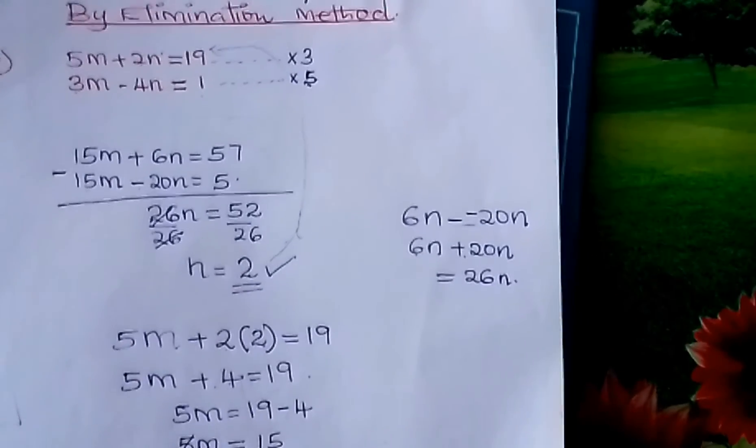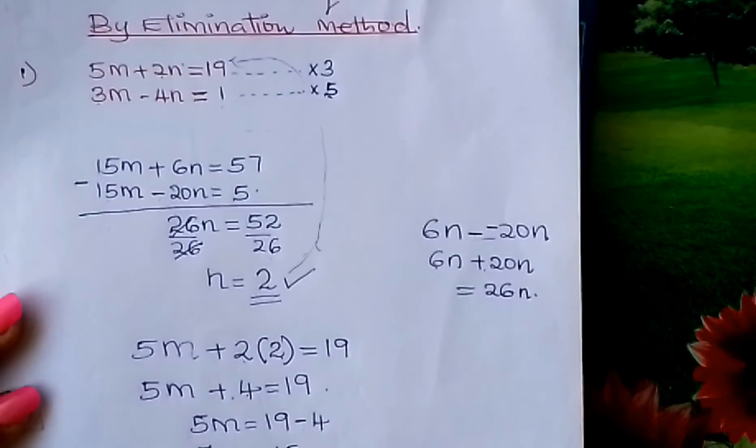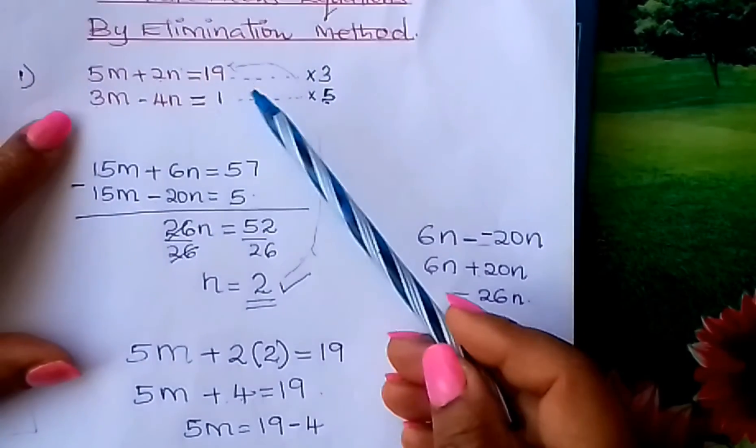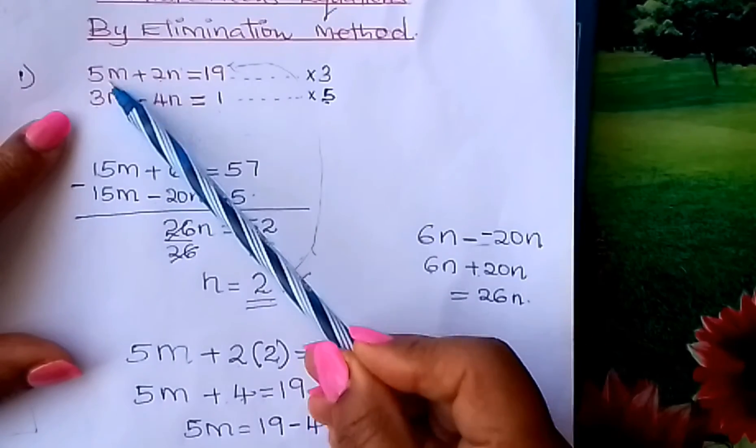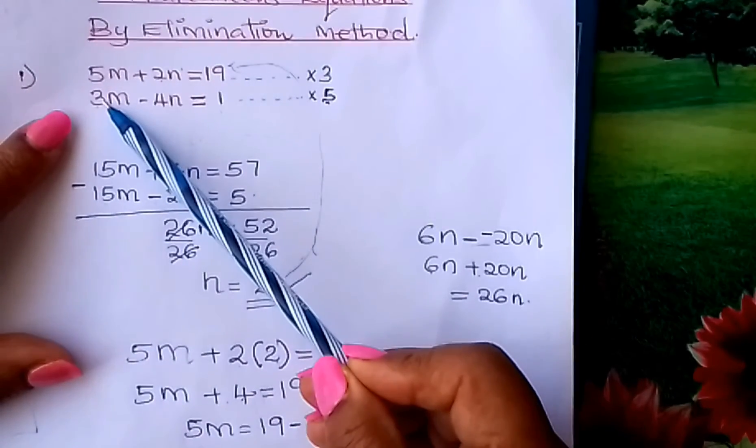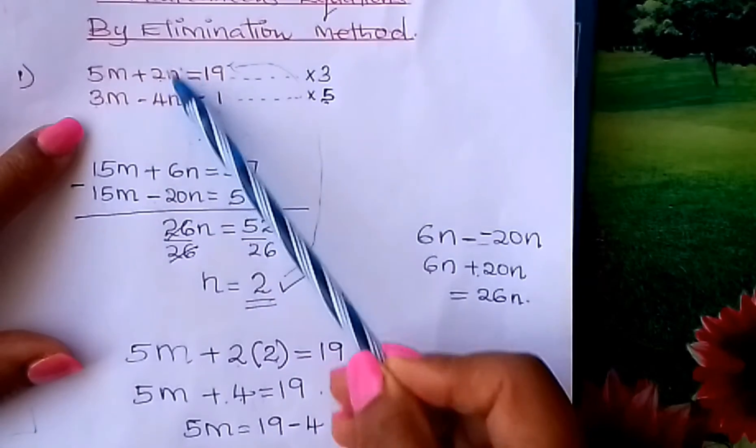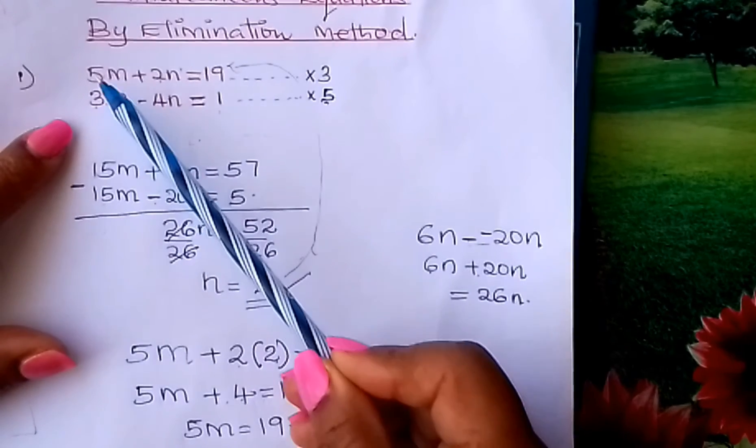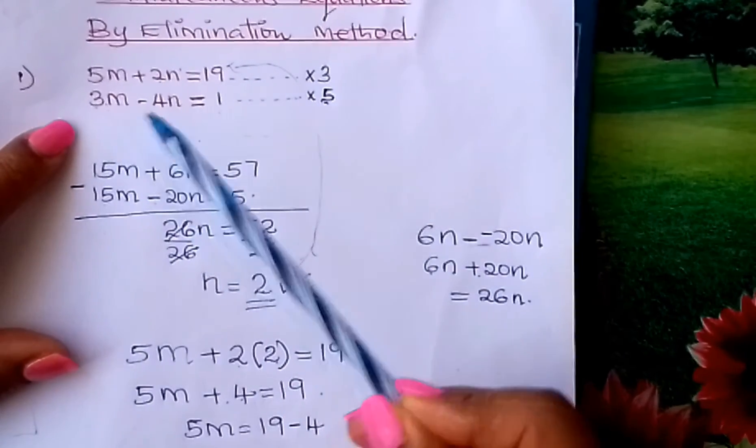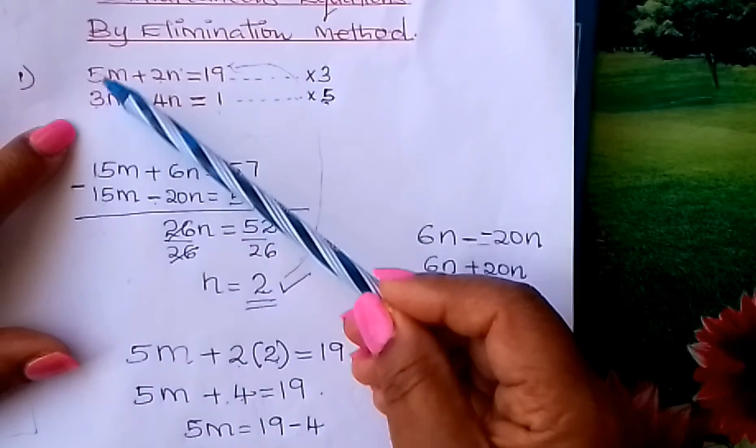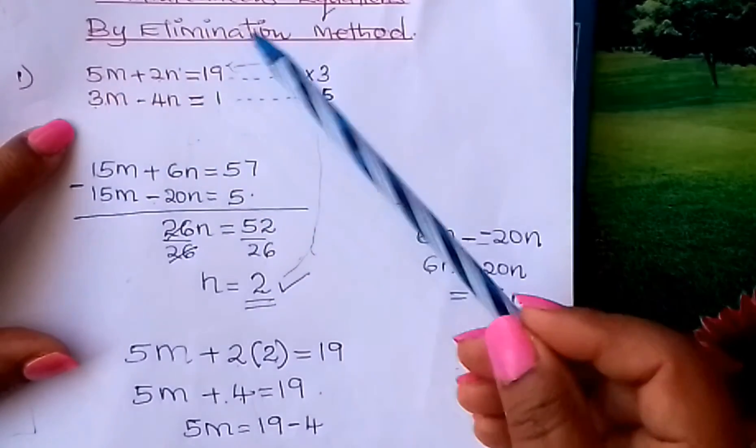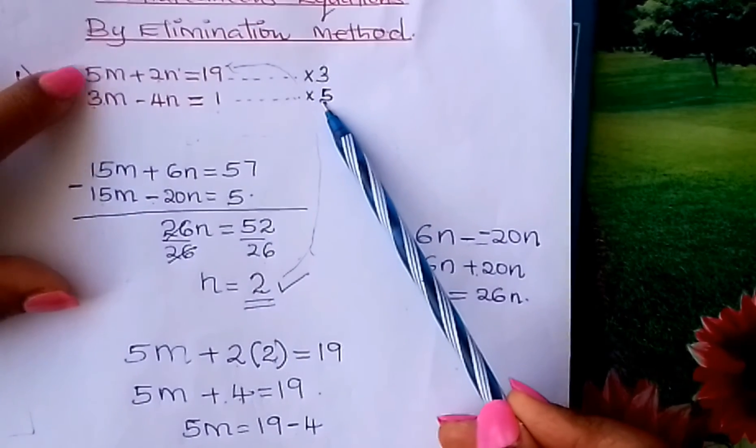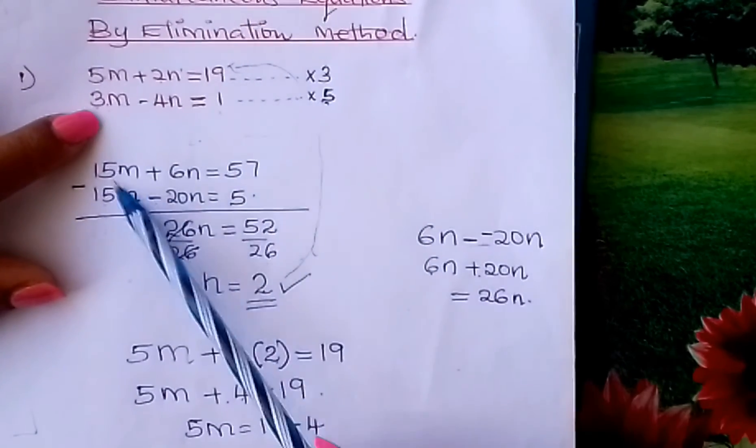I hope I've reminded you how to solve simultaneous equations by elimination method. I'll repeat a bit. You make these terms, either the first terms or the second terms, equal. In my case, I've used the first terms. I made them equal by first getting the LCM. What is the LCM of 3 and 5? It is 15. Multiply here by 3 to make this 15, multiply here by 5 to make this 15.